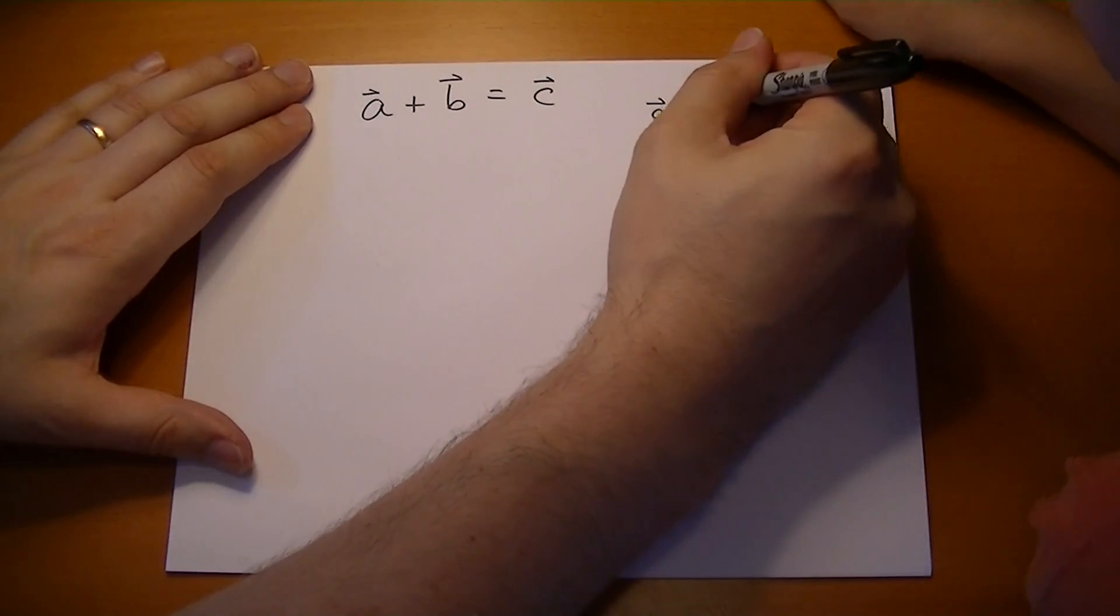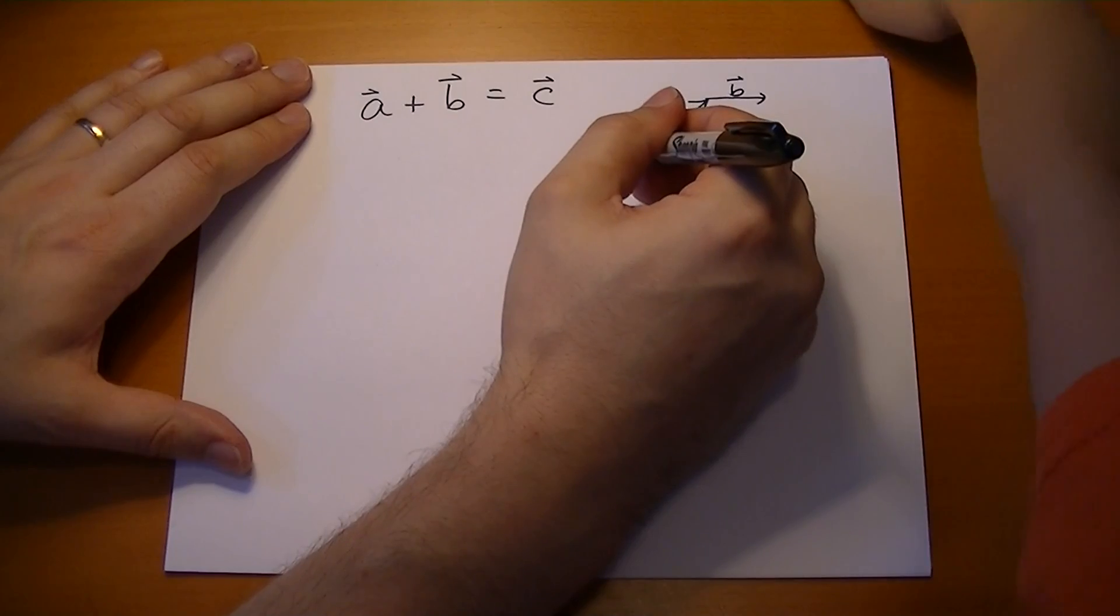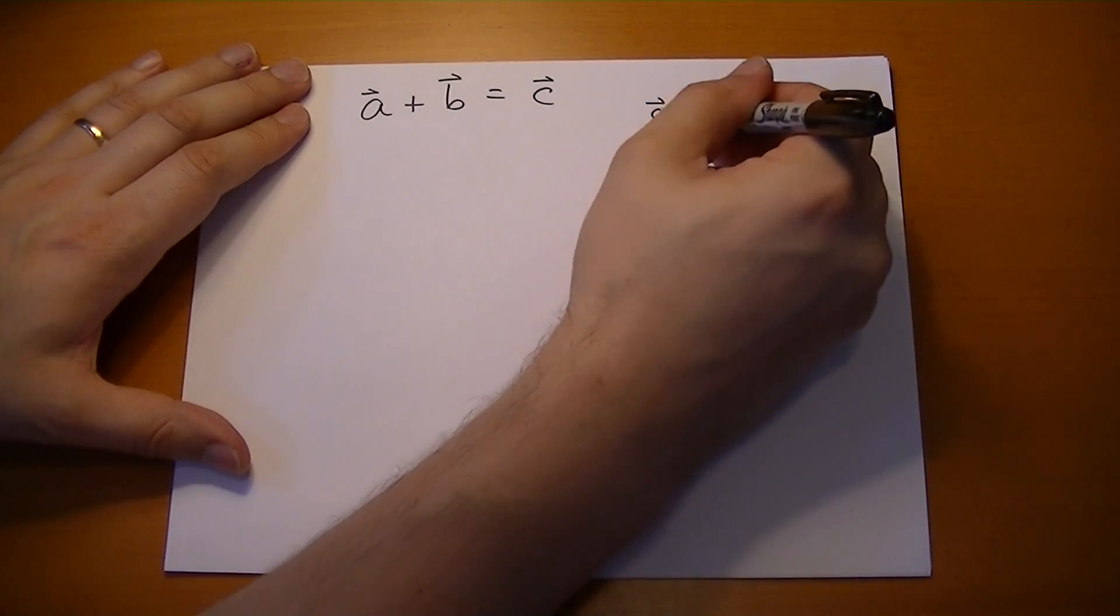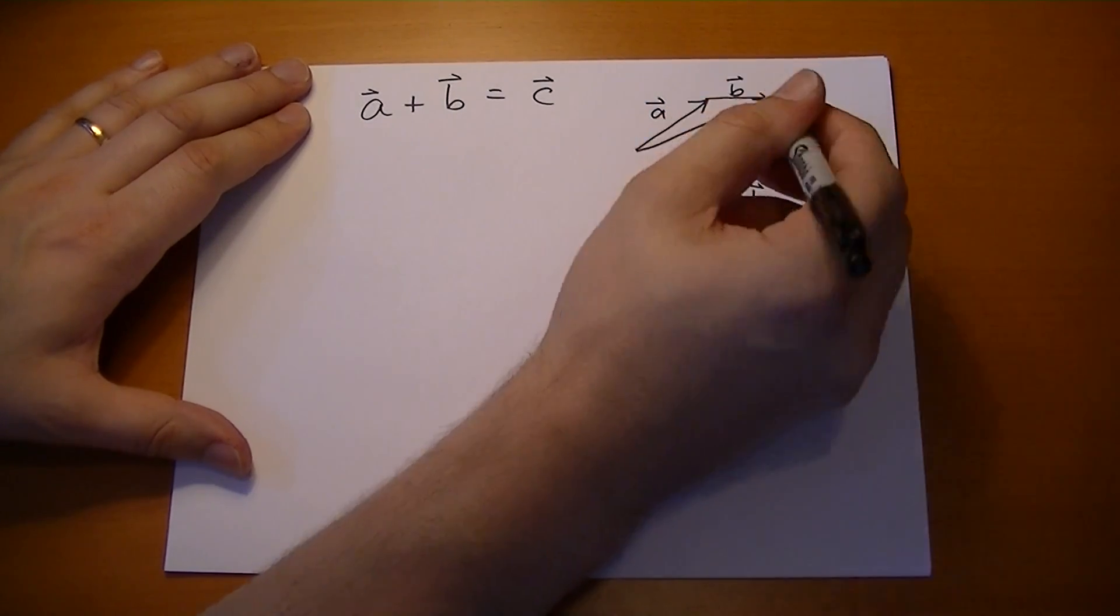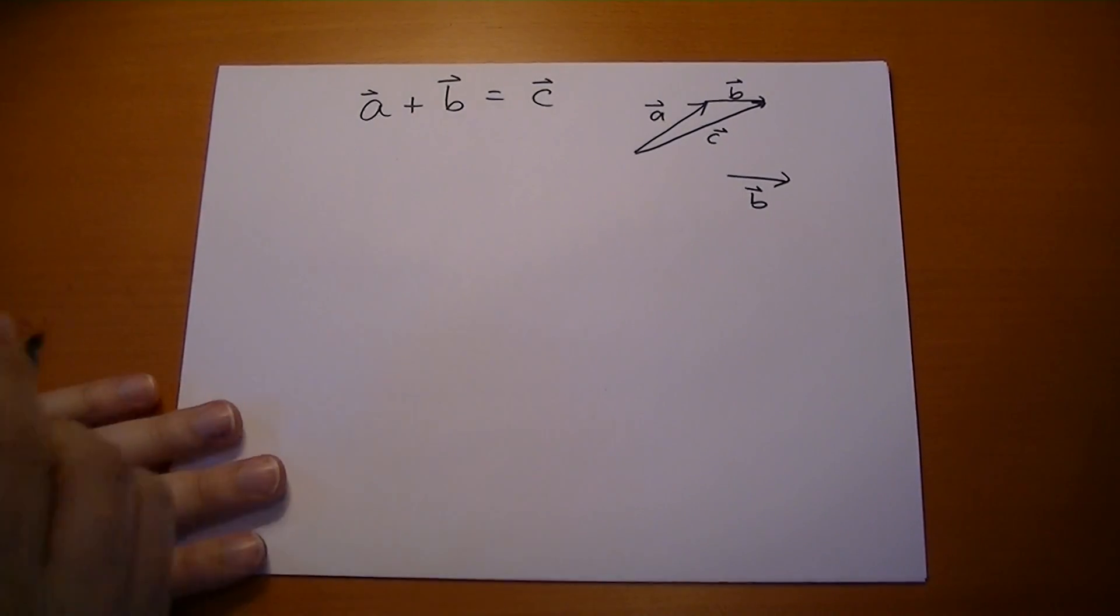So that's going to be something like this. And then the C vector goes from the tail of A to the head of B. Okay? So it's pretty obvious how that works. It's not that complicated.